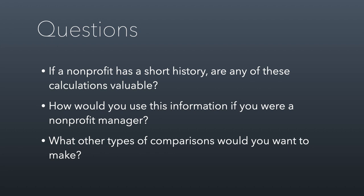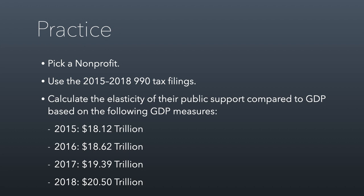Is it valuable to do this over a short history? The quick answer is no. You could take any of the 990s you're working on for your project and calculate the elasticity of their public support or any other revenue source compared to GDP, based on GDP measures I've provided. You might track 2015 versus 2016 — that change of nonprofit revenue versus GDP change over that time period gives you an elasticity measure. Or you could go from 2015 to 2018, and that would give you the average elasticity across all of those years.